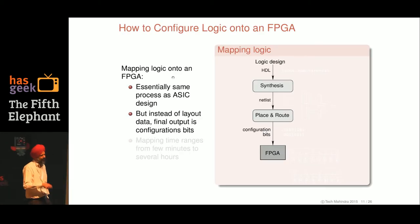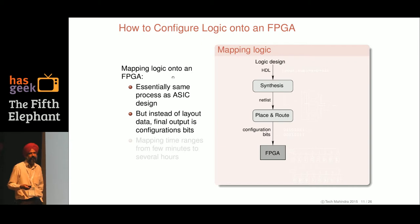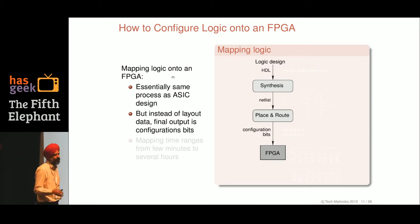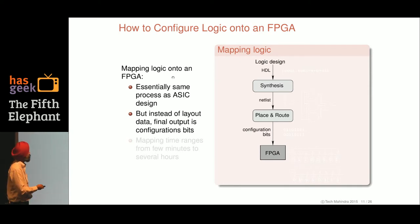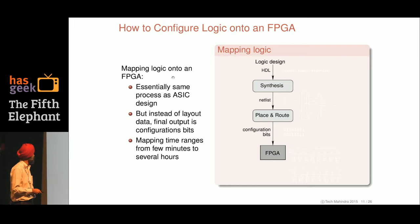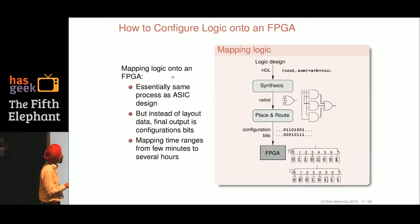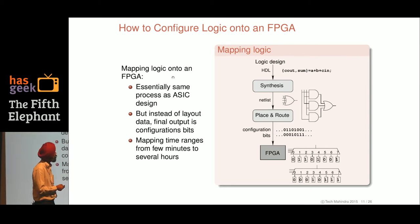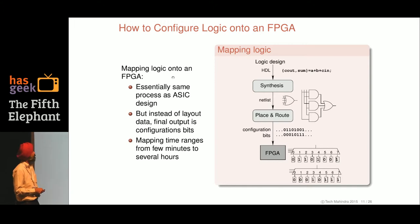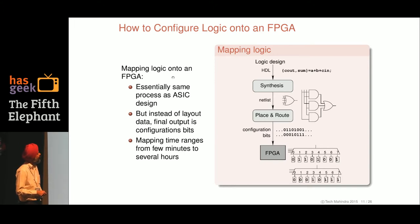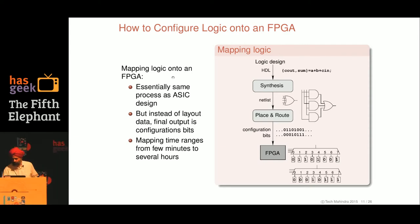The programming process is the same as designing for an ASIC. You start with your logic design in HDL, synthesize it, get the netlist, do place and route. The last step is instead of getting fabrication masks as you would for an ASIC, you get configuration bits that you put on the FPGA. Time ranges from a few minutes to several hours. In HDL — Verilog, for example — you specify a full adder, synthesis converts it into a gate-level netlist giving the adder output and carry-out. When you do place and route, you get the bit sequence of configuration bits, which you then configure onto your lookup tables.